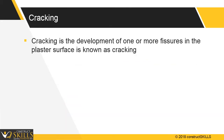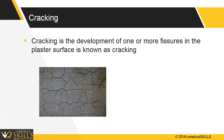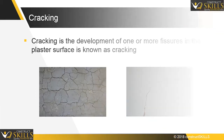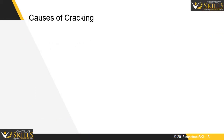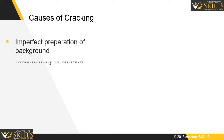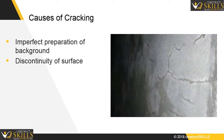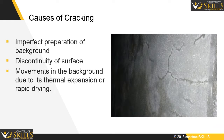The development of one or more fissures in the plastered surface is known as cracking. Cracking is caused due to imperfect preparation of background, discontinuity of surface, and movement in the background due to its thermal expansion or rapid drying.